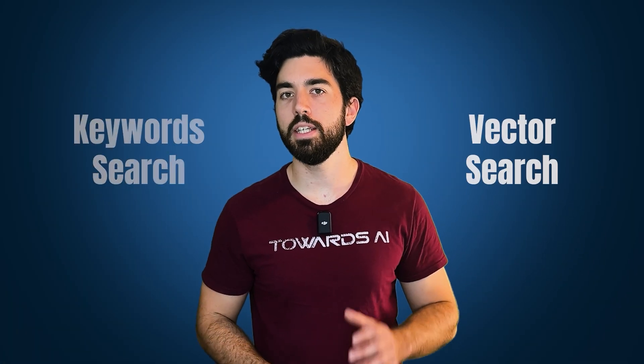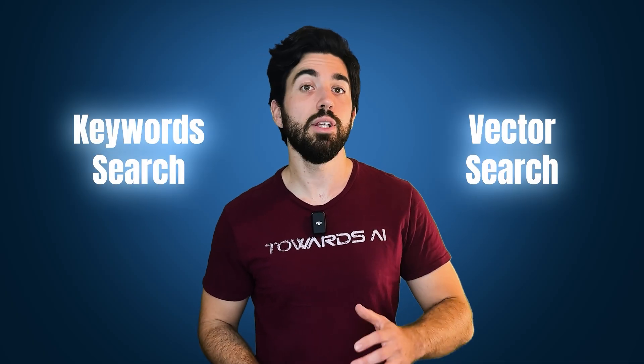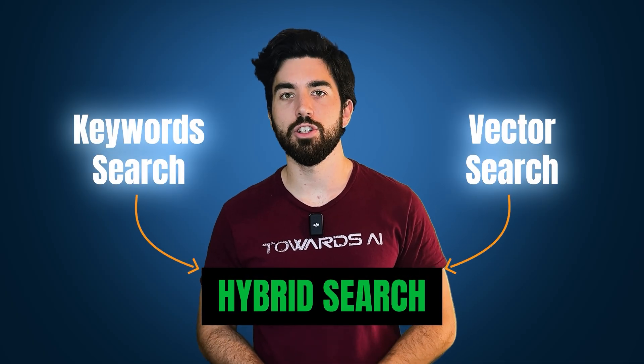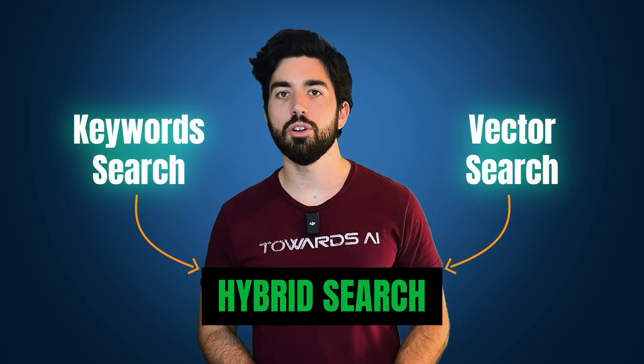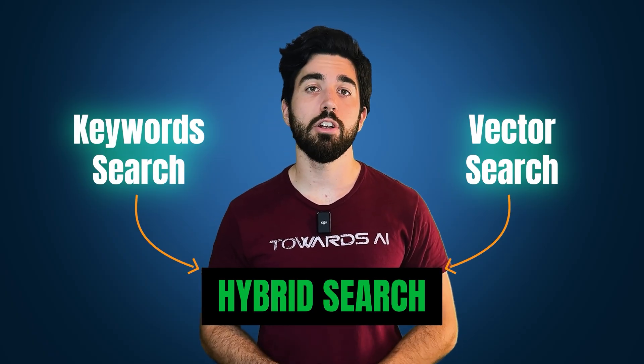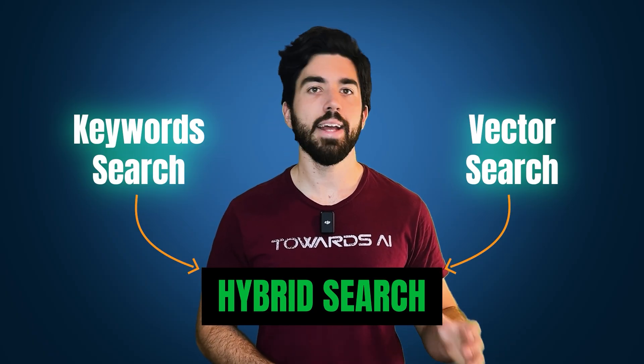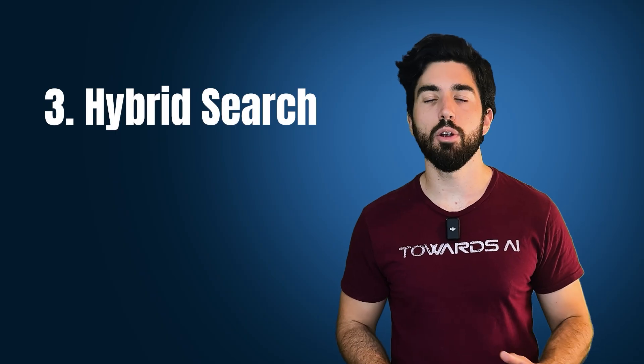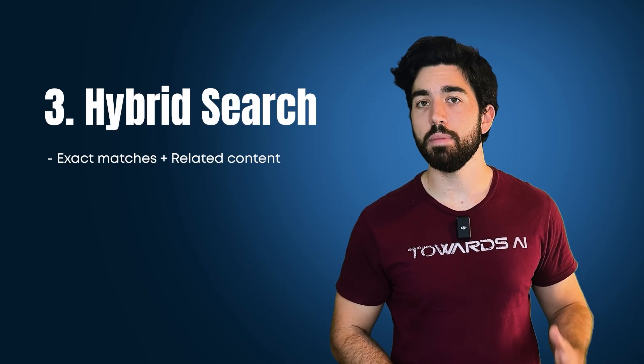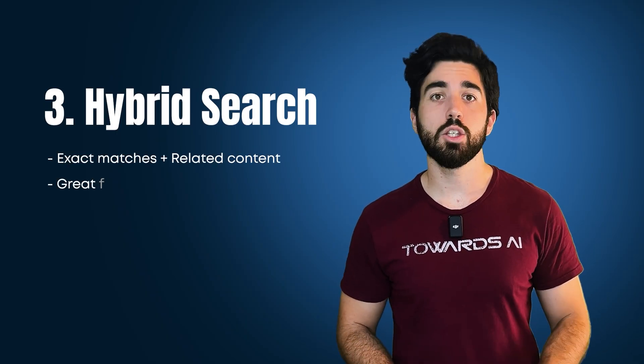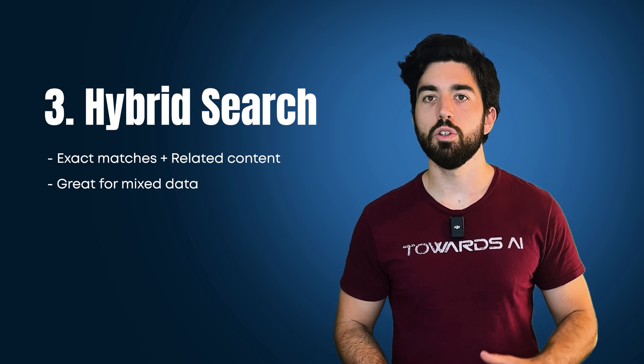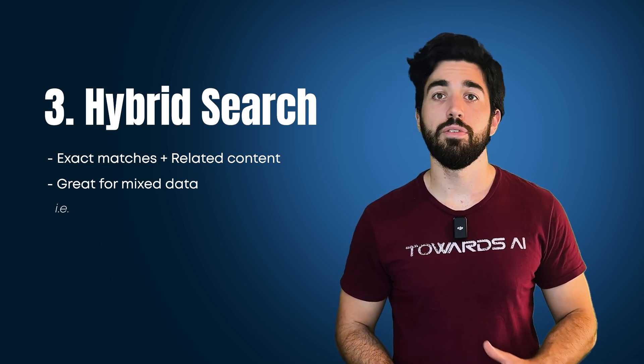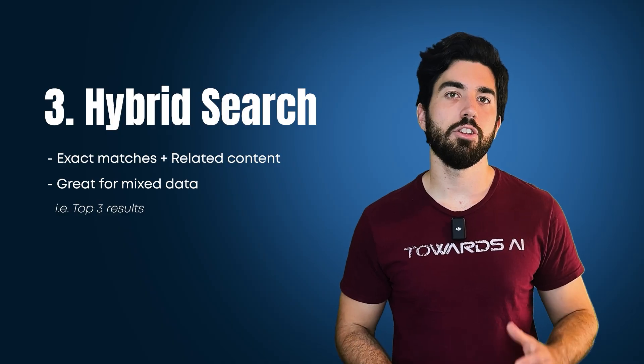But we don't need to choose between keywords and embeddings. We can simply use both. That's what hybrid search does. It combines the exactness of keywords with the captured meaning of embeddings. It can leverage both exactly what we say and what we mean. Hybrid search is perfect when you need both exact matches and related content. It's great for mixed data and when you want to balance finding everything relevant, which would be a lot of information, with finding the most relevant things, like the top 3.